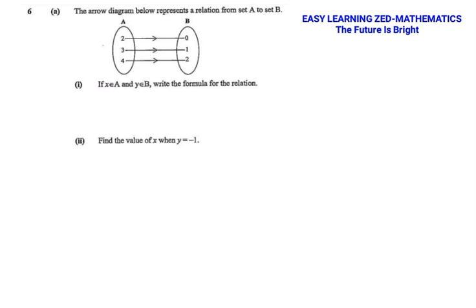This is question 3. The arrow diagram below represents a relation from set A to set B. As you can see, A has {2, 3, 4} and B has {0, 1, 2}.